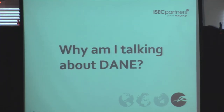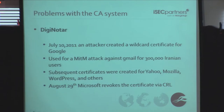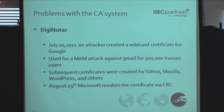Why do we need DANE? There are a few problems with the CA system. The first example is DigiNotar. In July of 2011, an attacker was able to compromise DigiNotar and create wildcard certificates for anybody. They created one for Google and used it to man-in-the-middle Gmail for about 300,000 Iranian users. During that time they also created wildcards for Yahoo, Mozilla, WordPress, and numerous other sites.